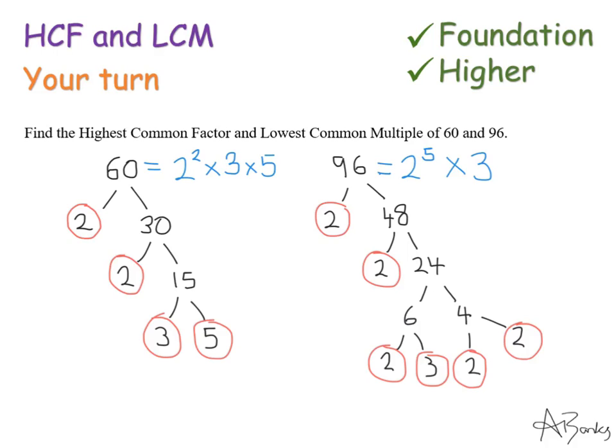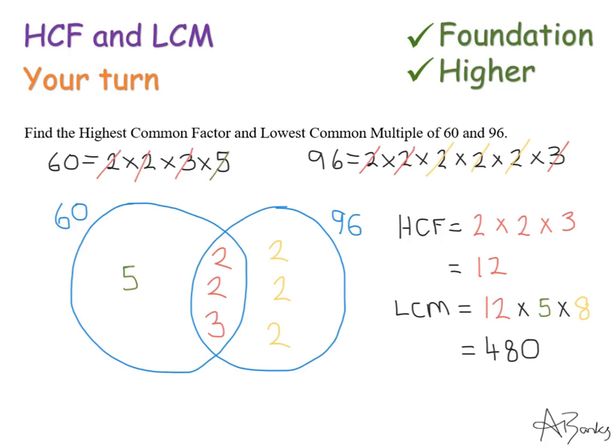Here's the prime factor decomposition. You might have done this differently, but you should have that 60 is 2 squared times 3 times 5, and 96 is 2 to the power of 5 times 3. When you draw your Venn diagram, the highest common factor is 12 and the lowest common multiple is 480. Thank you for watching my video.